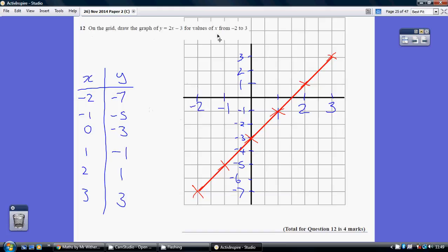Now this question was a bit different in as much we had to choose a sensible scale. I can see I'm ranging in x values from minus 2 to 3 and y values from minus 7 up to plus 3, so something like this would be appropriate where you're trying to use the bulk of the graph paper.